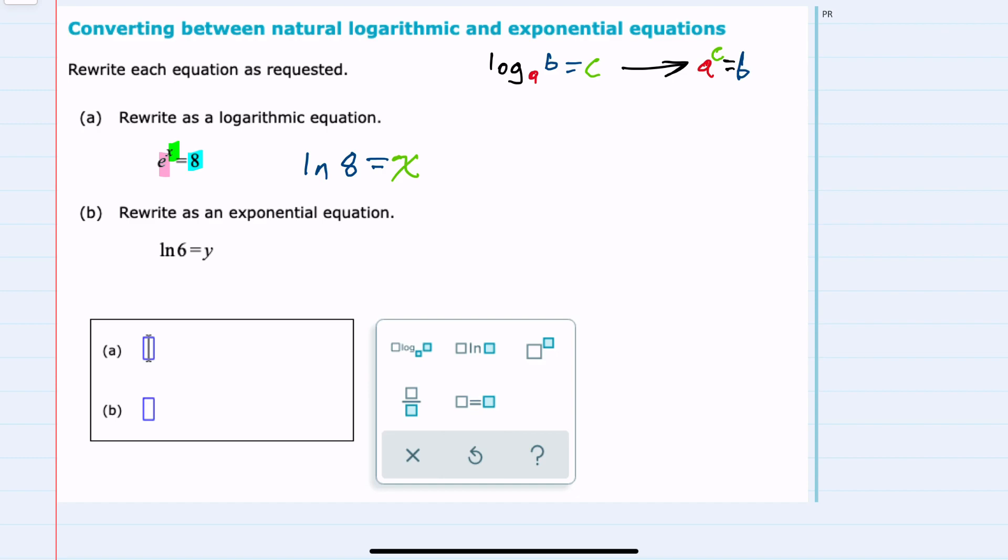For the second example, we're going in the opposite direction. So we would start with the base of the logarithm. And since this is a natural log, our base is E. What the logarithm is equal to is our exponent. And in exponential form, that base and exponent are calculated to be what we are taking the logarithm of. So that would be our 6.